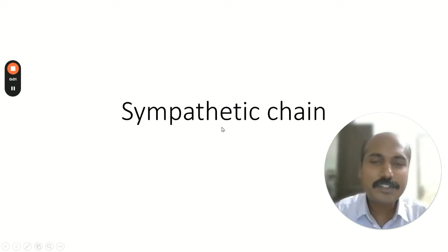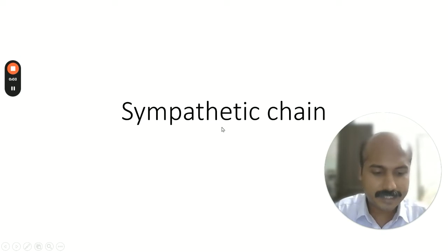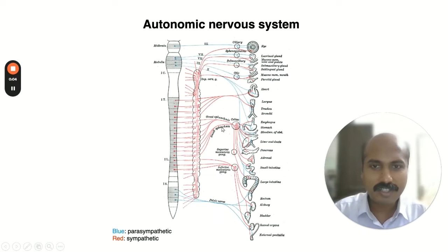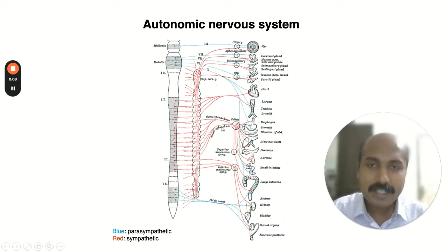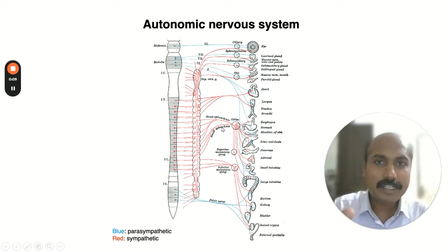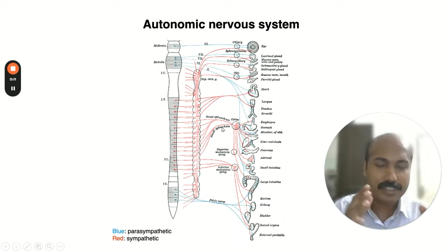One of my students asked: what is the sympathetic chain? So I thought I'd make a video on that. The autonomic nervous system is a part of the nervous system which is concerned with autonomic functions.